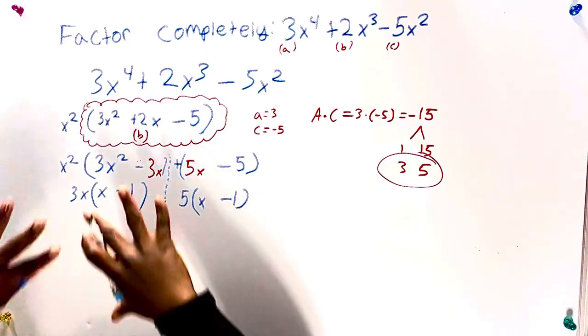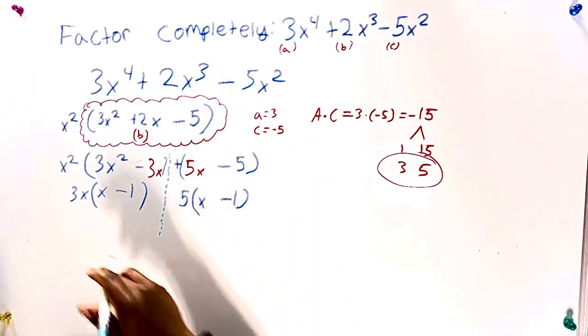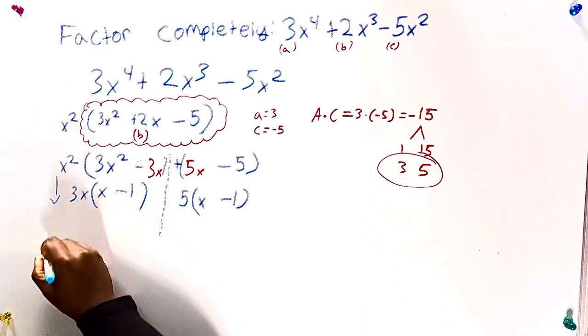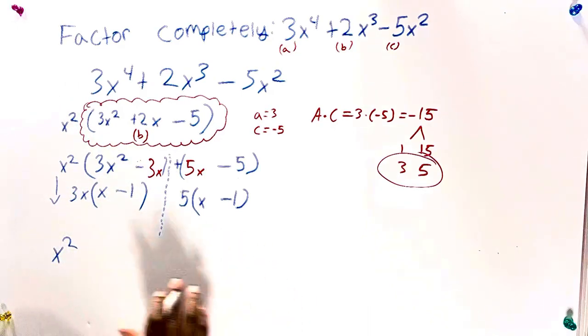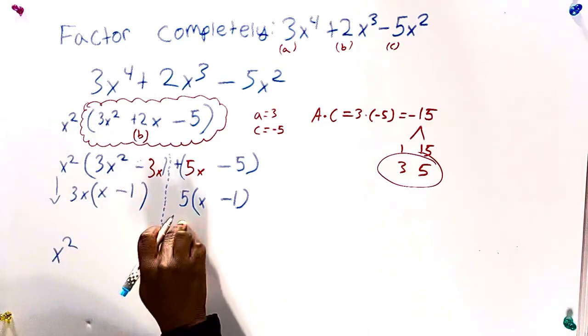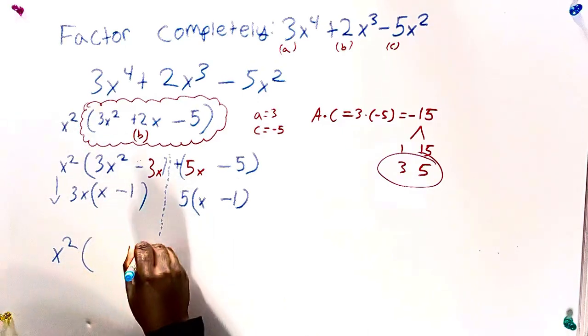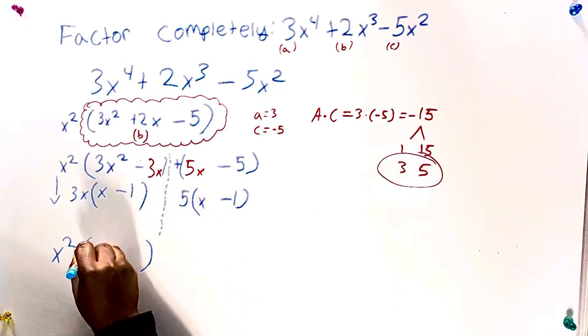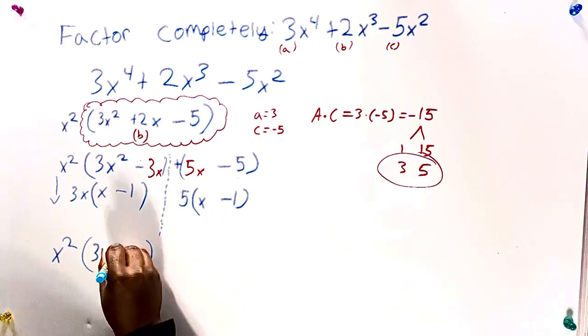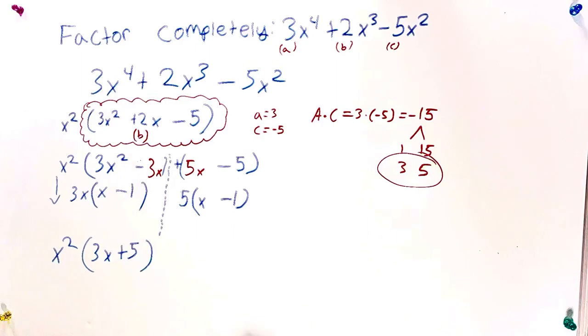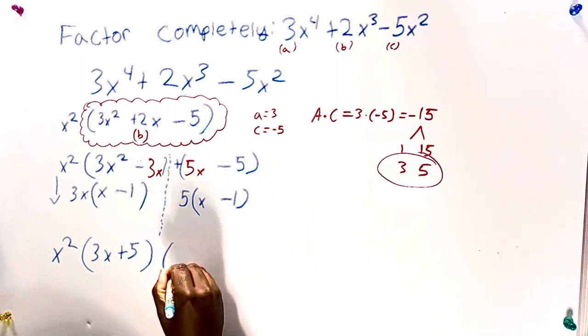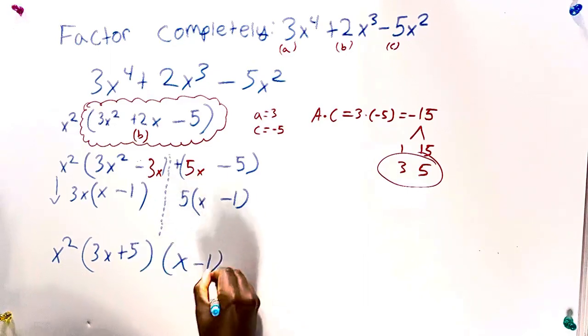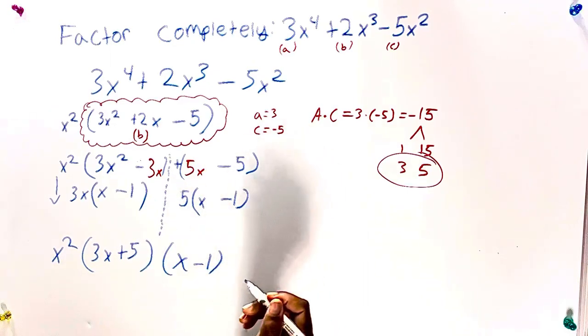So then now we can put all the terms together. We can bring down this x squared because now we want to write our final answer. This 3x and this 5 outside the parentheses, right, we can form our own parentheses for it. This will be 3x plus 5. This is the same, so we can put them in one parentheses. This will be x minus 1. Then now all we have to do is just box our answer.